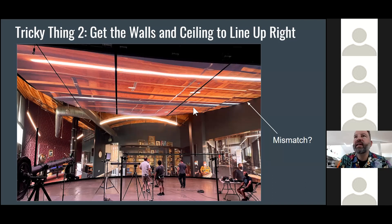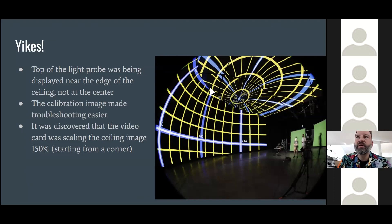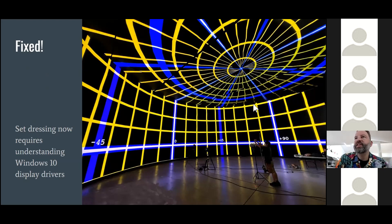Another tricky issue was getting the geometry correct. There appeared to be a missing segment of environment between the wall and the ceiling when displaying things. It took a surprising amount of time and a special calibration pattern to debug — we noticed there was a rogue 150% scaling on the video signal going to the ceiling panels. When we turned that back to 100%, things matched up nicely and we could proceed with the test.